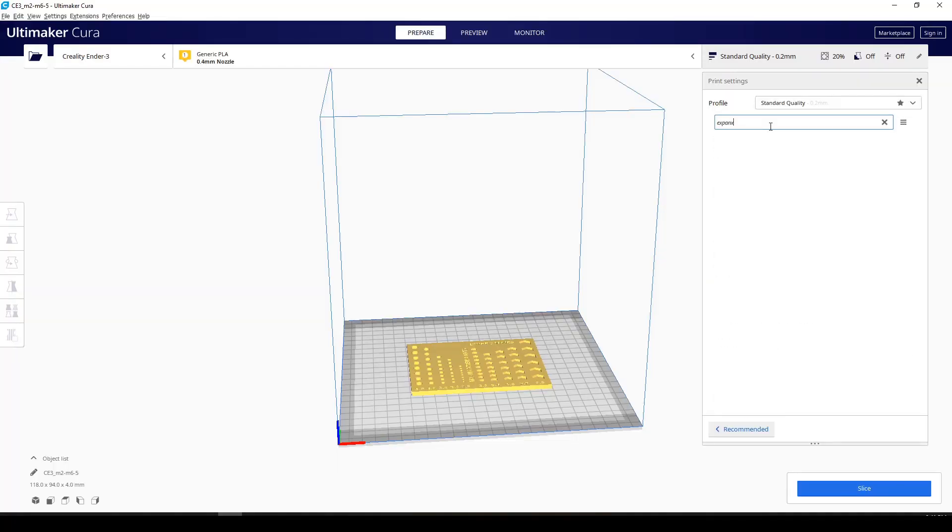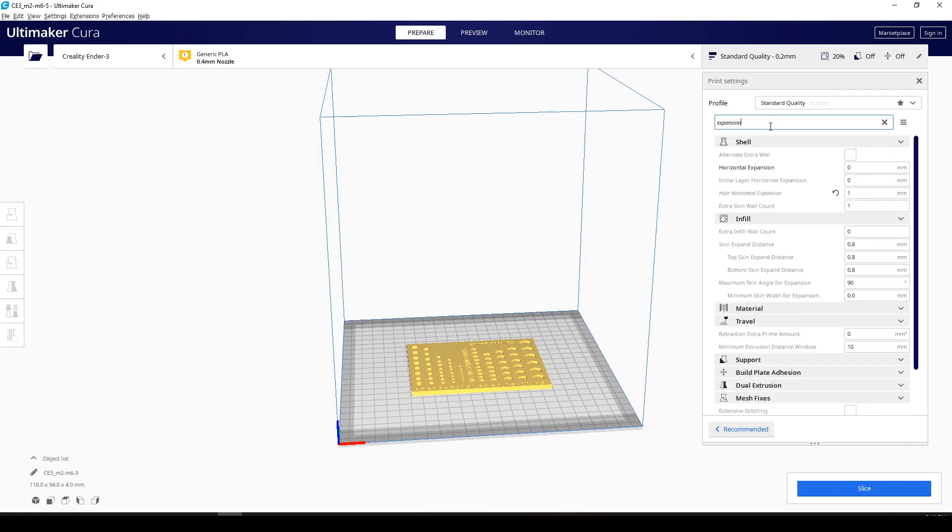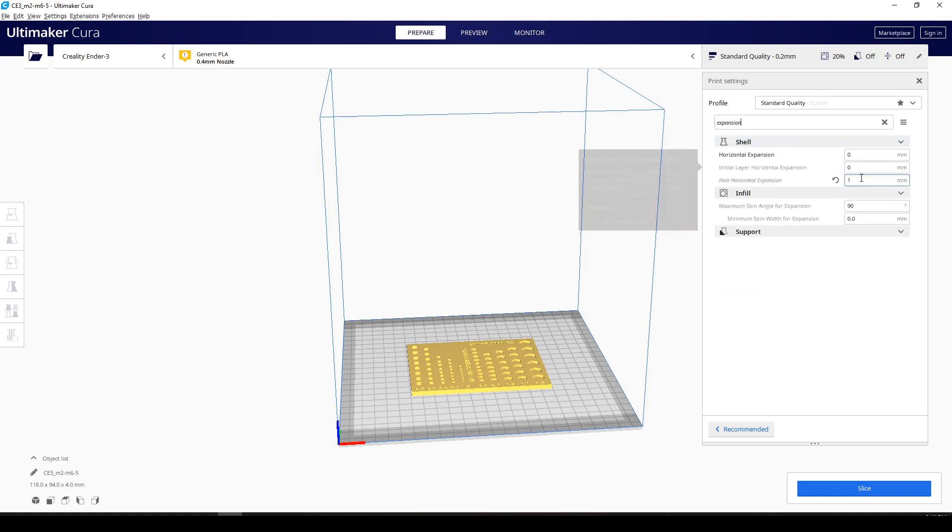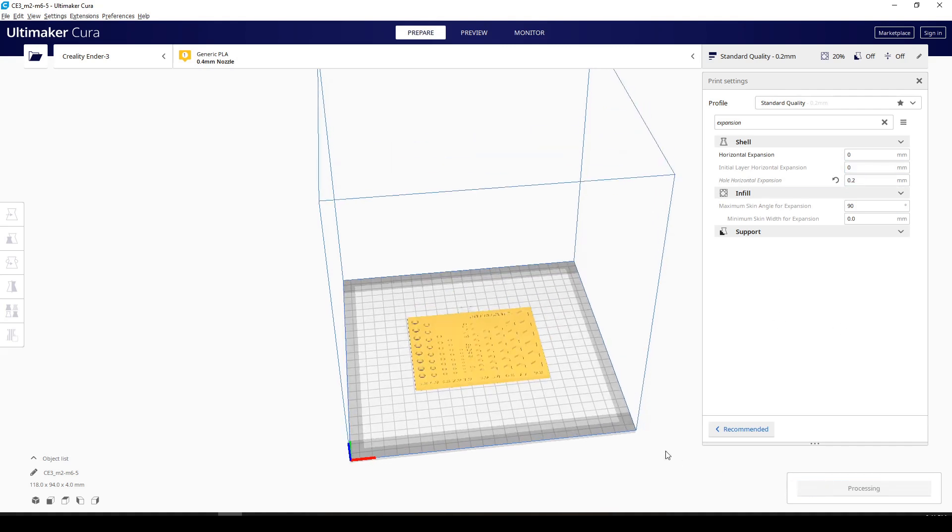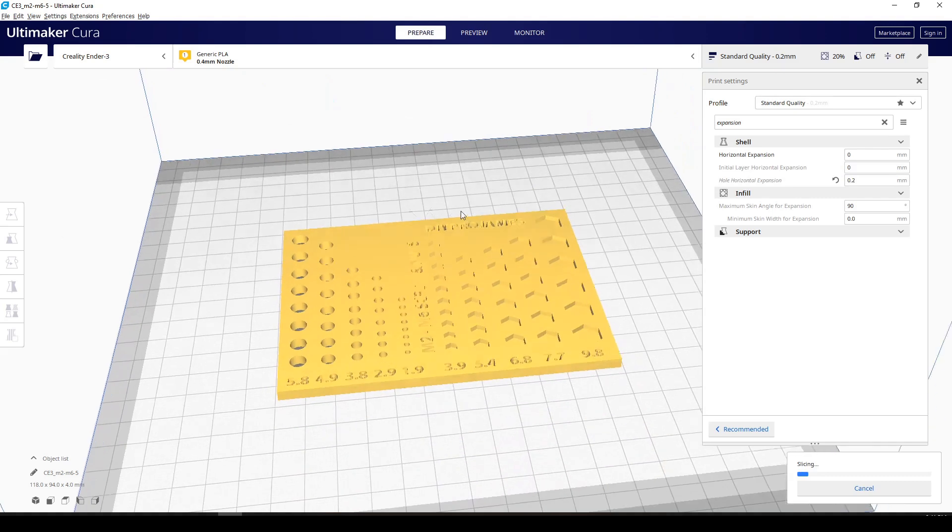Now this is a new feature in Cura 4.6.1. If you type in the word expansion, the horizontal expansion is for the outer layer, the hole horizontal expansion is for the inner layer. I want to change the inner layer, so I'm going to put 0.2 millimeter.